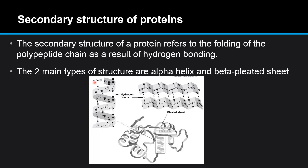On the left here we have the alpha helix structure, with a hydrogen bond between this oxygen and this hydrogen atom. On the right we have the hydrogen bond in the beta pleated sheet between this hydrogen and this oxygen atom.